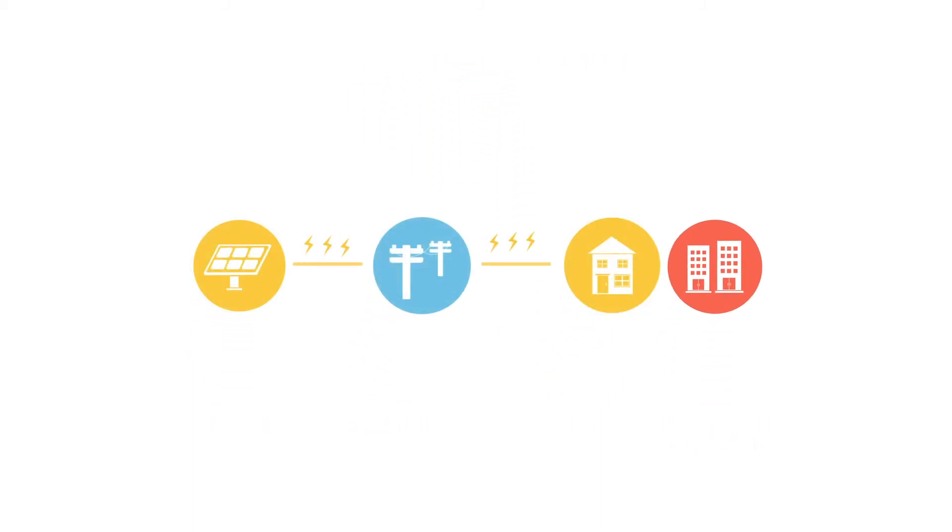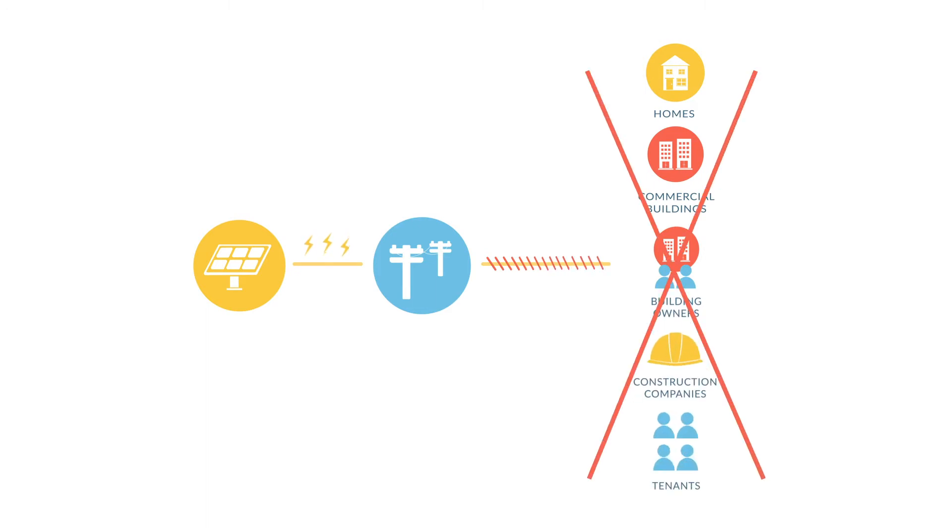The current energy value chain is fragmented and broken. Typical silos prevent utilities from working with building owners, construction companies, and tenants.